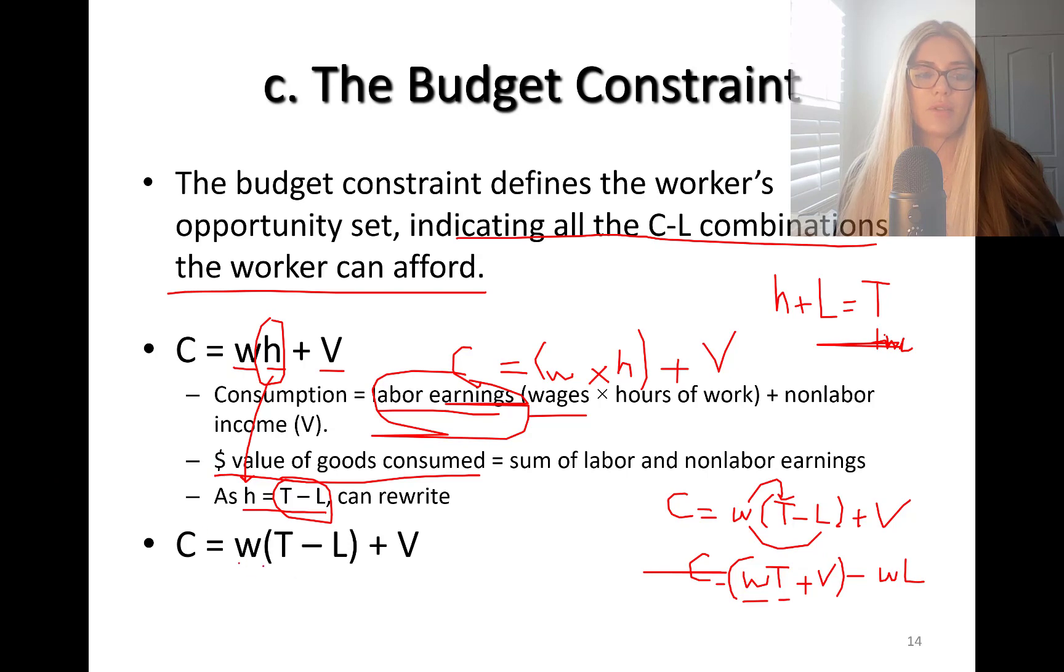What do we have left from here? W times T plus V is written here. You have also minus negative W times L. We can rewrite it: W, instead of H, you can put T minus L plus V. Rearrange this, W times T plus V, this is your constant term, minus W times L.